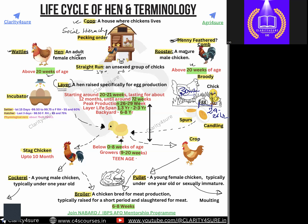The laying period lasts for about 12 months, until around 72 weeks, after which egg-producing capacity slows down. This is very important for examinations. The peak egg-producing capacity of the hen lasts from 26 to 29 weeks. That is a very important figure to remember.